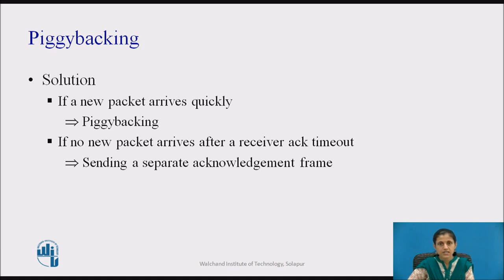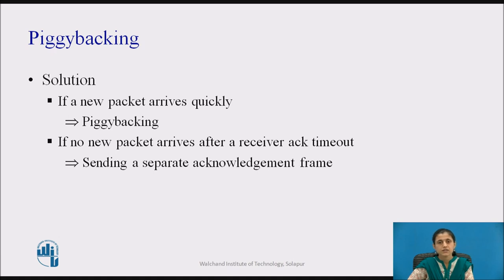Since the data link layer cannot foretell the future, it must decide on a scheme such as waiting a fixed number of milliseconds. If a new packet arrives quickly, the acknowledgement is piggybacked on it. Otherwise, if no new packet has arrived by the end of the time period, the data link layer just sends a separate acknowledgement frame.